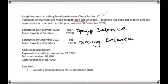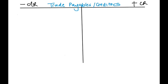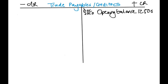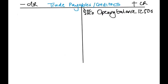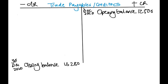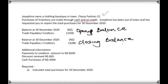Now we enter the information. The balance at 30 November is our opening balance of 12,500, entered on 1 December 2020. The closing balance on 30 December 2020 is 13,280, entered on the credit side since this increases our creditors balance.